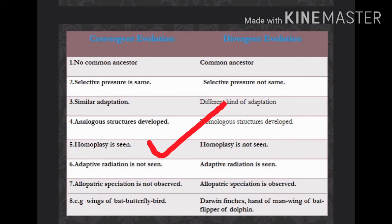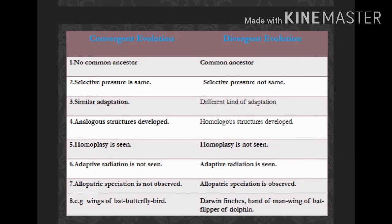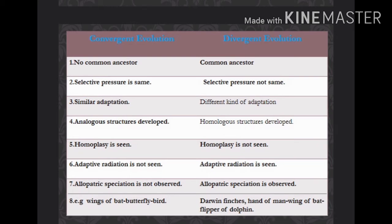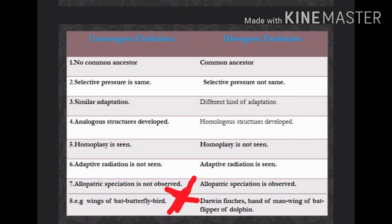In divergent evolution, homoplasy is not seen. Now the sixth point: in divergent evolution, adaptive radiation is taking place.